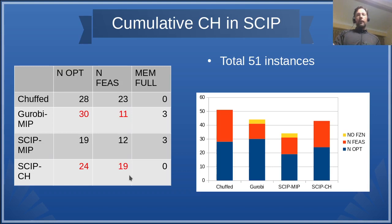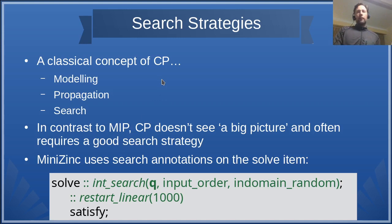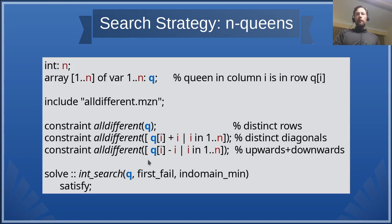Search strategies, typical for CP. For CP, we don't have something like LP relaxation. So we don't have a big picture of our instance. So a good search strategy is often very helpful. And MiniZinc has a sub-language for that. It has search annotations on the solve item. For an array of variables, you can specify variable selection and value selection strategies and something like restarts, for example. Here is a model of N queens with three all_different constraints and a search strategy which prefers variables with the smallest domain and then prefers the smallest values in the domains.